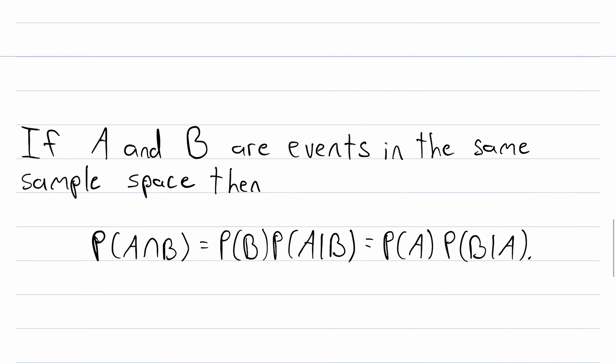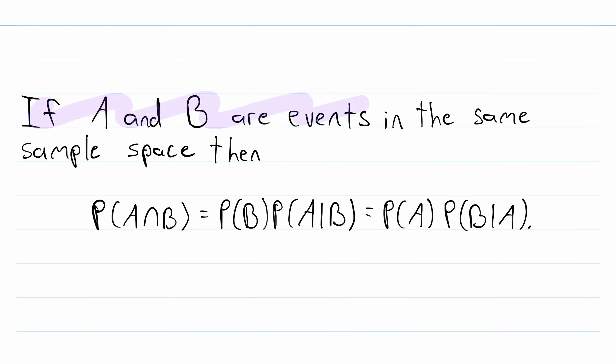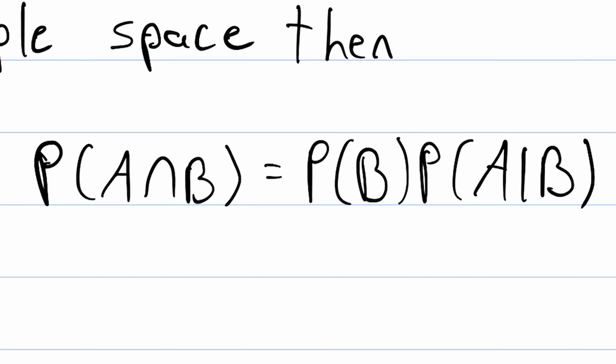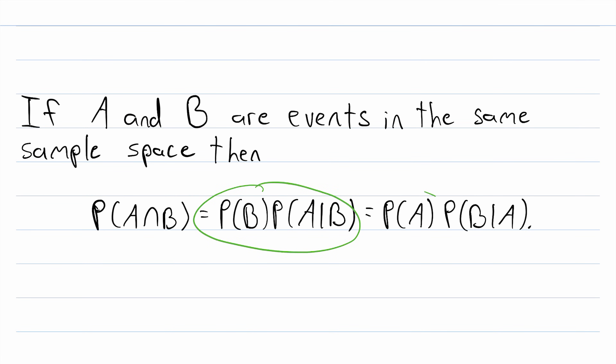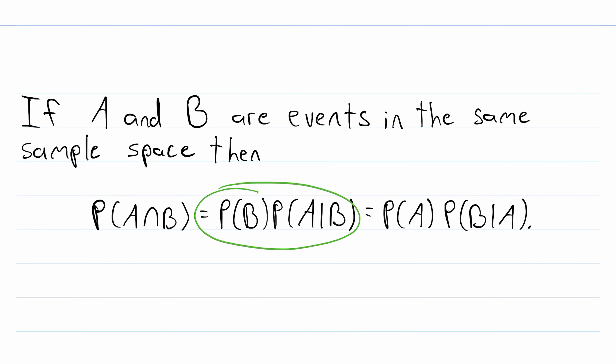So let's check out the statement of the multiplication rule, which is more general. If A and B are events in the same sample space, then the probability of A and B is equal to the probability of B multiplied by the probability of A given B. If you're familiar with conditional probability, you might notice that this formula follows directly from the definition of conditional probability. Notice that we could also solve this formula for the conditional probability. You see how these expressions work to define the probability of A intersect B, but depending on what your events are, it might make more sense to use one form than the other.